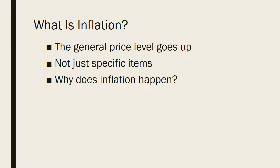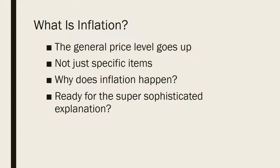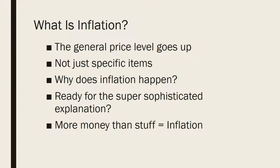Now why does inflation happen? There's this sophisticated explanation from Milton Friedman. Basically, the theory is that when you have more money than stuff, you end up with inflation. If there are lots and lots of dollar bills that people are spending all over the place — money times velocity — inflation tends to go up.